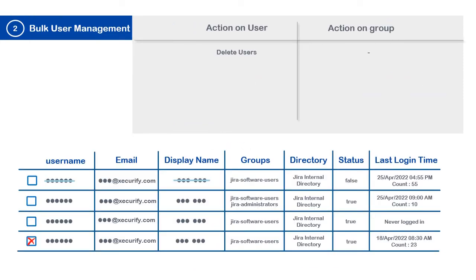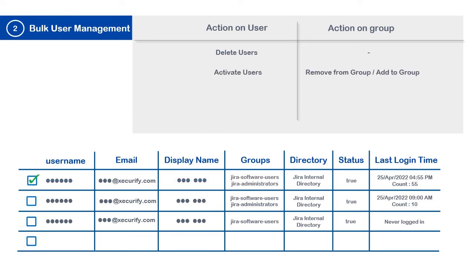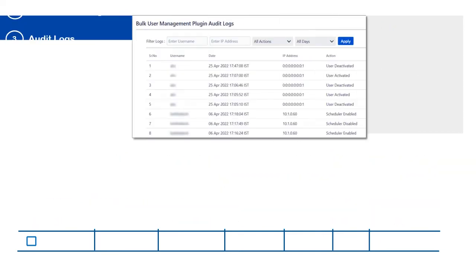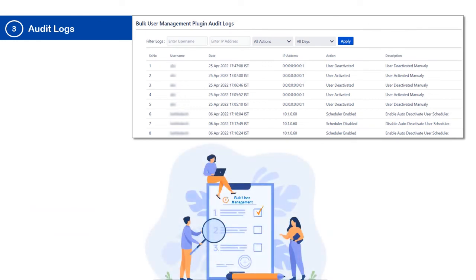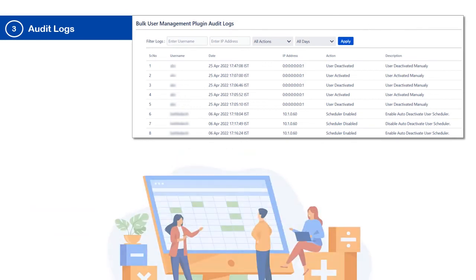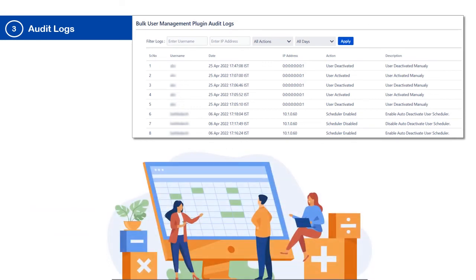Users can be deleted, or activated and added to a required group simultaneously, as well as deactivated and removed from a particular group in bulk. The plugin's audit logs allow administrators to keep a record of all operations performed by the app.